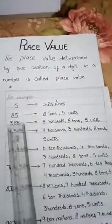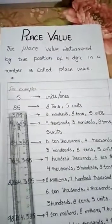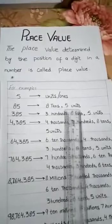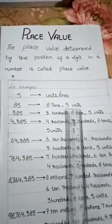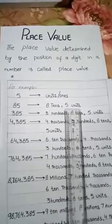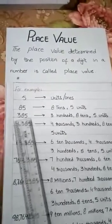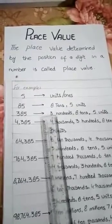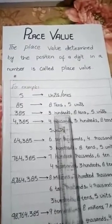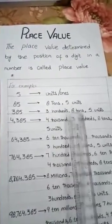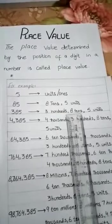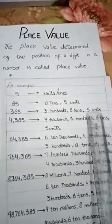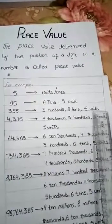Now if we have two numbers, the place value of 8 is tens and the place value of 5 is units. Now if we have three numbers, then the place value of 3 is hundreds, the place value of 8 is tens, and the place value of 5 is units.